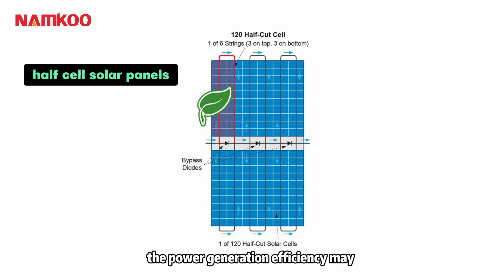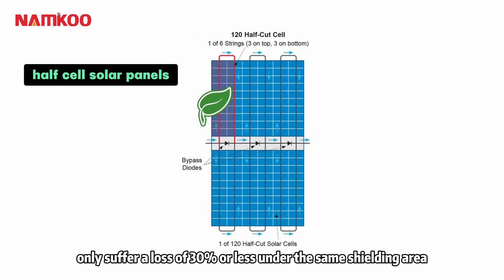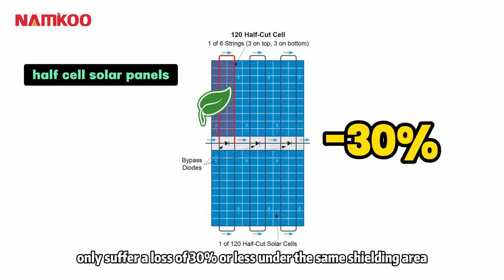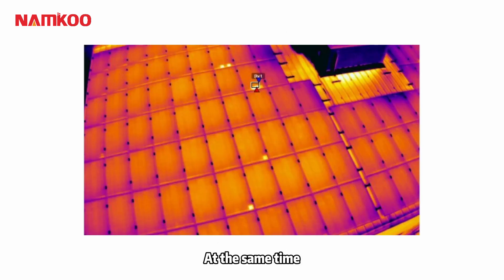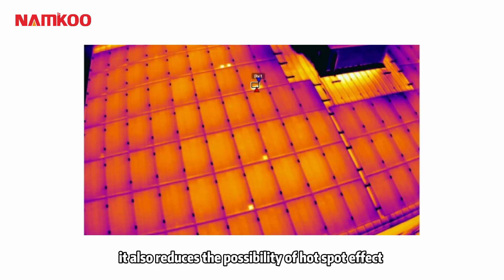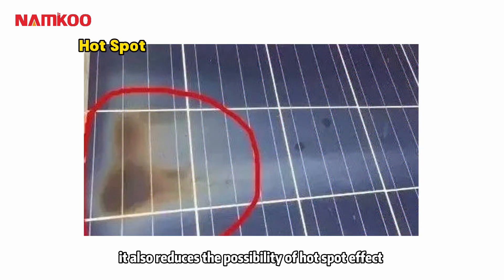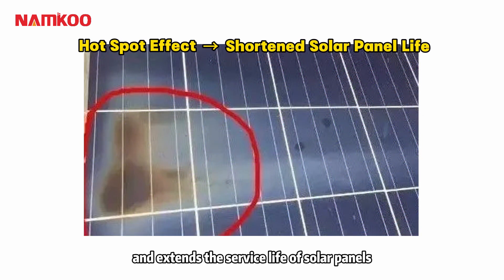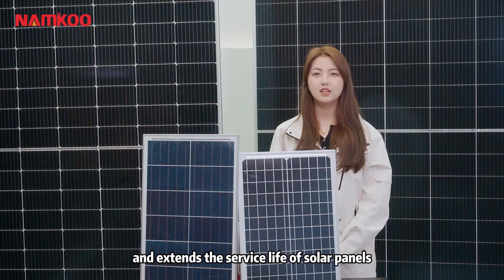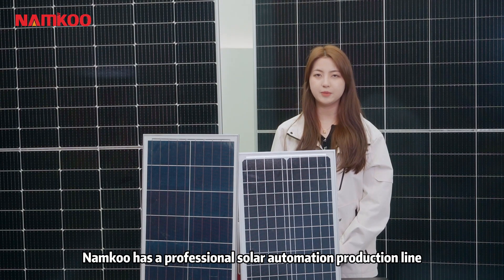Due to the upper and lower partition design of half-cell solar panels, the power generation efficiency may only suffer a loss of 30% under the same shading area. At the same time, it also reduces the possibility of the hot-spot effect and extends the service life of solar panels.